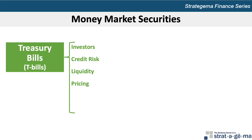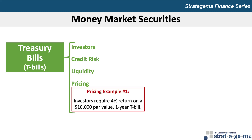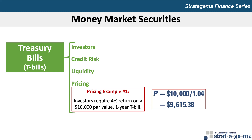The price that an investor will pay for a T-bill with a particular maturity depends on the investor's required rate of return on that T-bill. The value of a T-bill is the present value of the par value. For example, if investors require a 4% annualized return on a one-year T-bill with a $10,000 par value, the price they're willing to pay is $9,615.38, calculated as the $10,000 par value divided by 1 plus the 4% required rate of return. If investors require a higher rate of return, they'll discount the $10,000 at a higher rate, which will result in a lower price.